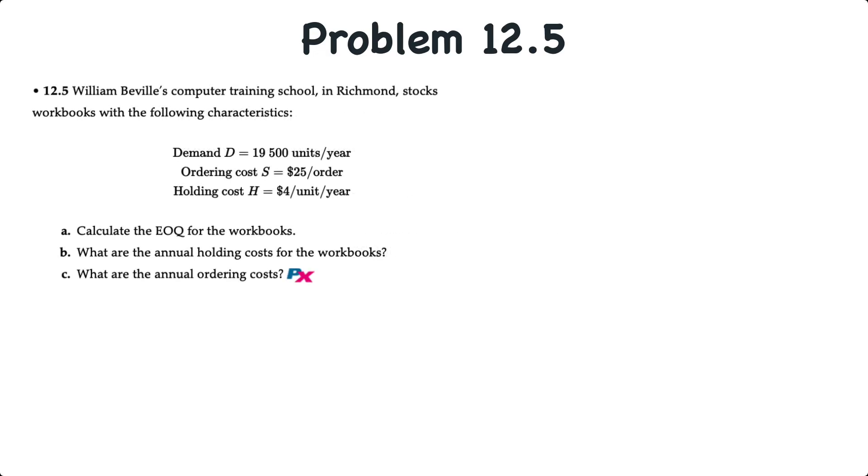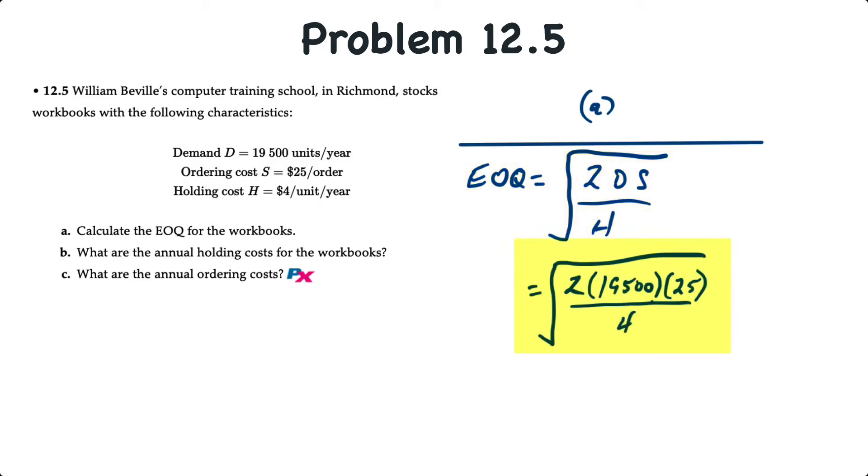For requirement A, the formula for EOQ is equal to the square root of 2 times the demand times the ordering cost, divided by the holding cost. So that's going to be equal to the square root, and in the numerator of a fraction, we'll have 2 times 19,500 times 25 divided by 4. That's equal to 493.71, or rounded to 494 units, because you can't order a partial unit.